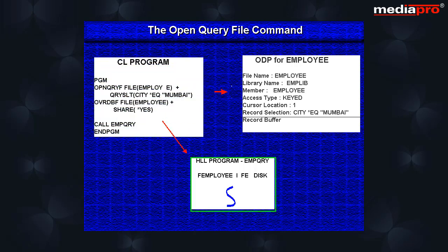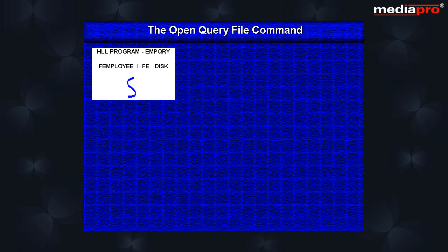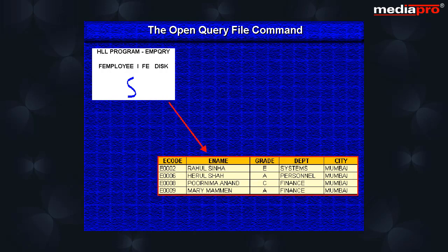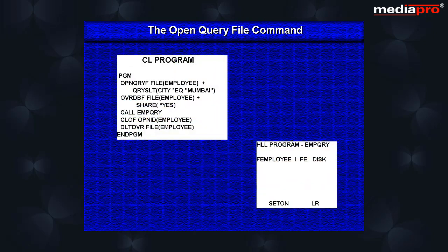This will cause the HLL program to use the ODP created by the open query file command when it opens the file. The program will be presented with a set of records that have been selected by the open query file command. When the program completes, we should close the file and also delete the override using the delete override command.